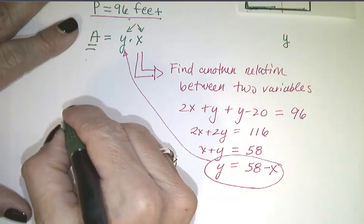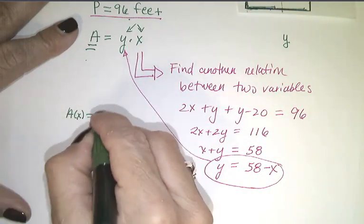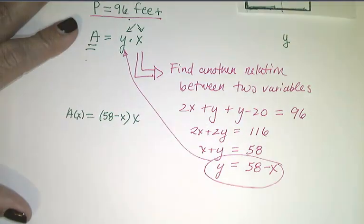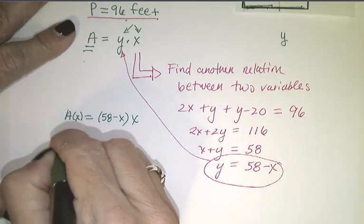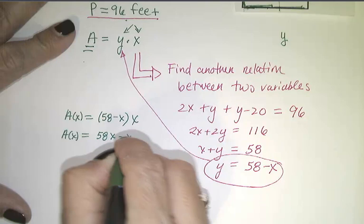So now I have A of x, so area is a function of x, is 58 minus x times x. Okay? Which I might, just for ease, rewrite this as 58x minus x squared.